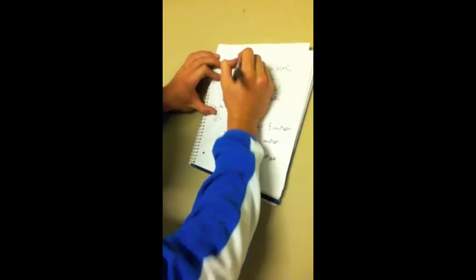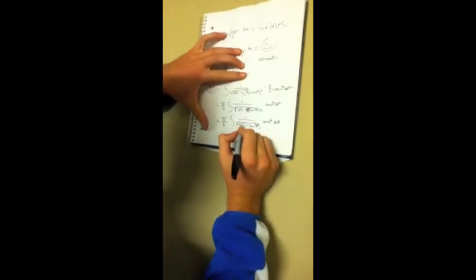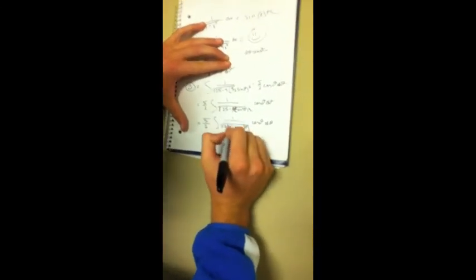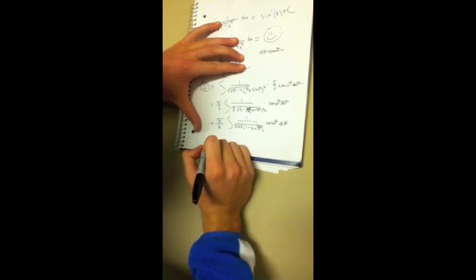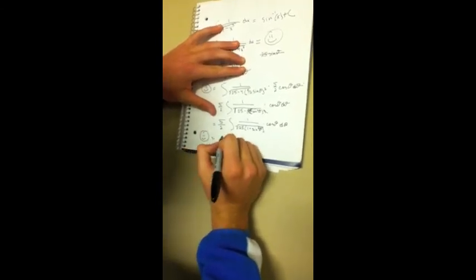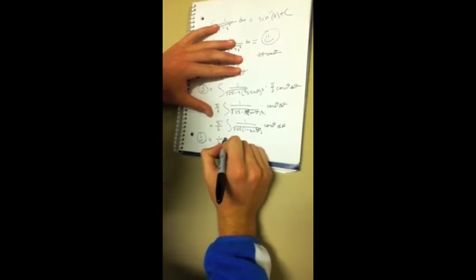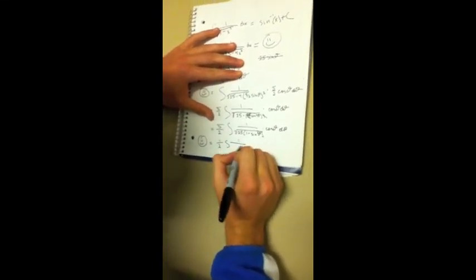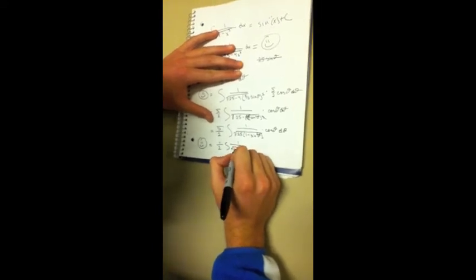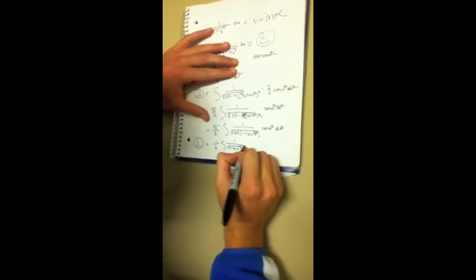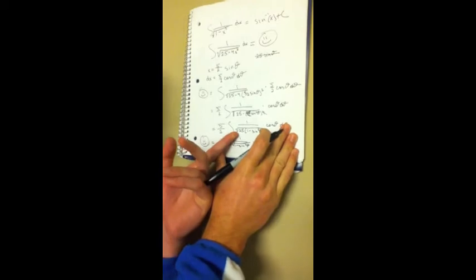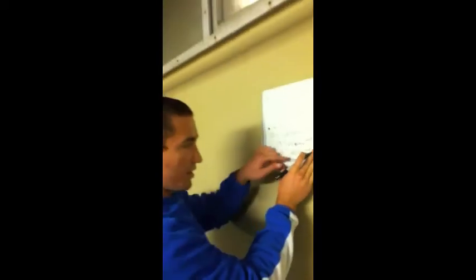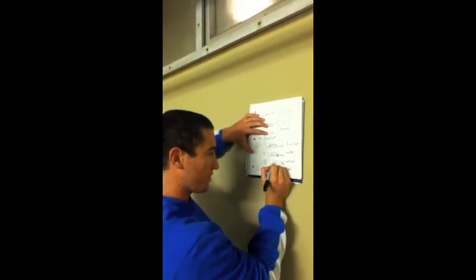We can pull out the 25 from under the square root: 25 times (1 minus sine squared theta). You'll see we have that 1 minus sine squared, which leads us back to the same approach as before. The square root of 25 is 5, so the 5 halves and the 5 cancel, leaving 1 half times the integral of 1 over the square root of 1 minus sine squared theta, times cosine theta d theta.